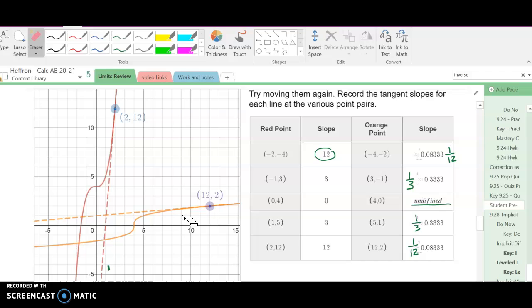But one thing to be careful of. The tangent had a slope of 12 at the point (2, 12). The tangent had a slope of 1/12 at the point (12, 2). So this x is that y. This y is that x.